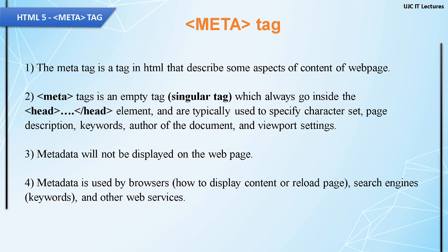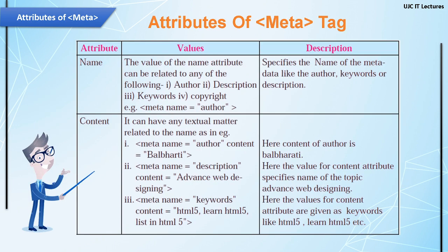Now let's learn the different attributes we can use with meta tag. Attribute number one is 'name' — it specifies the name of the metadata, such as author, keywords, or description. In short, 'name' is the unique identifier that can relate to an author name, description, keyword, or copyright details. Attribute number two is 'content' — it can hold any textual matter related to the name, and is always used along with the name attribute.